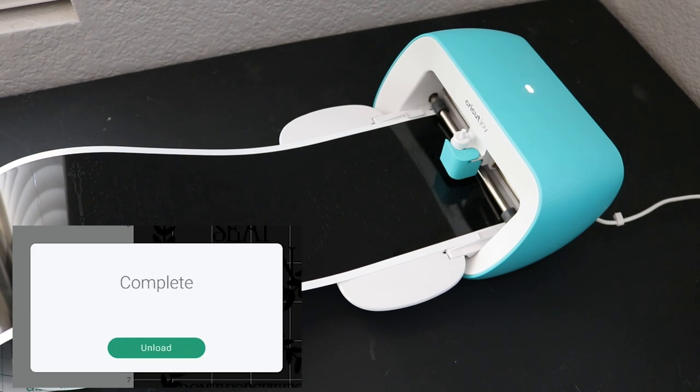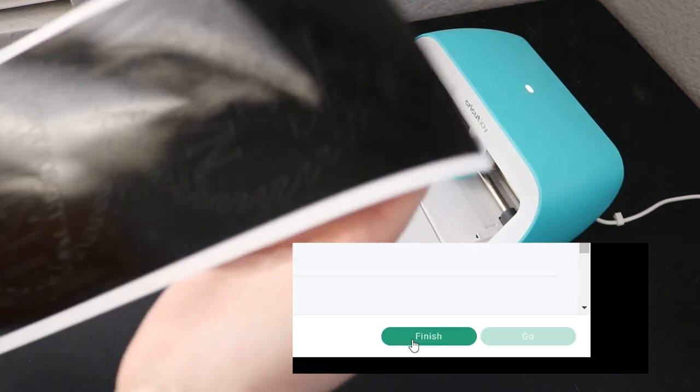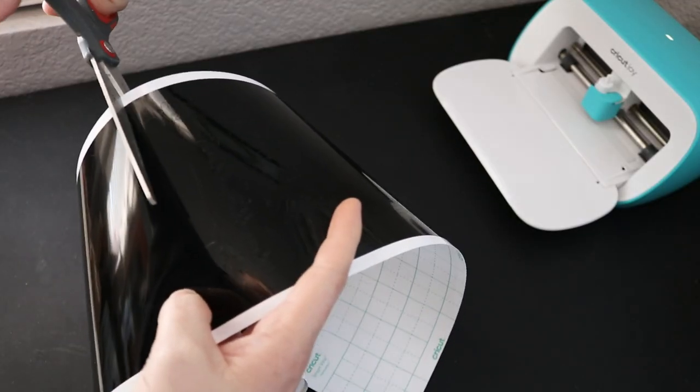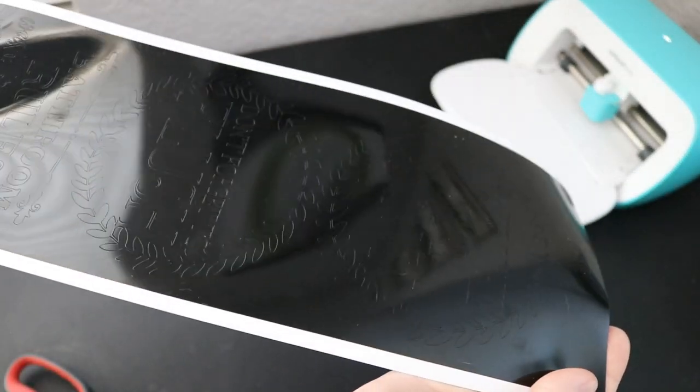Once it has reached 100% it's going to ask you to unload it and this just unrolls it from the machine so you can pull it out nice and easy without ruining your machine. You're going to click finish and done. See how quick and easy and simple that was. Telling you guys I love this machine so just simple and easy to use.